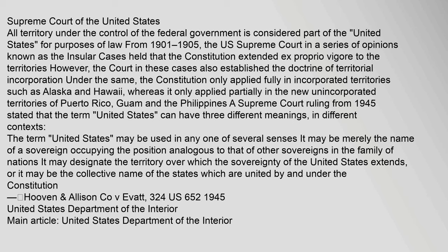All territory under the control of the federal government is considered part of the United States for purposes of law. From 1901 to 1905, the U.S. Supreme Court, in a series of opinions known as the Insular Cases, held that the Constitution extended ex proprio vigor to the territories. However, the Court also established the doctrine of territorial incorporation, under which the Constitution only applied fully in incorporated territories such as Alaska and Hawaii, whereas it only applied partially in the new unincorporated territories of Puerto Rico, Guam, and the Philippines. A Supreme Court ruling from 1945 stated that the term 'United States' can have three different meanings in different contexts: it may be merely the name of a sovereign, it may designate the territory over which the sovereignty of the United States extends, or it may be the collective name of the states which are united by and under the Constitution.